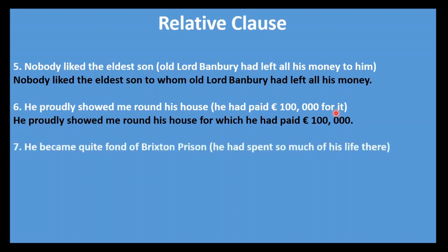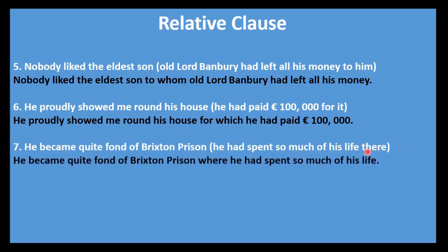Number seven: He became quite fond of Brixton Prison (he had spent so much of his life there). Prison is a place. The word 'there' in the bracket refers to the prison, and we replace 'there' with the relative pronoun 'where.' Answer: He became quite fond of Brixton Prison where he had spent so much of his life.